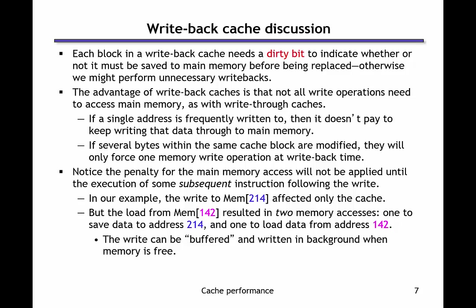To summarize: to implement write-back, we add a dirty bit to each cache block. The main advantage is that we avoid doing a write operation to main memory on every access — only when we displace a block from the cache do we need to write it back. This is a big win because typically we write to the same address or block many times before displacing it, due to temporal and spatial locality. This amortizes the cost of writing the block back to main memory over all those writes to the cache block.